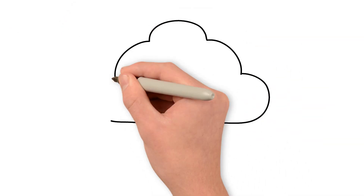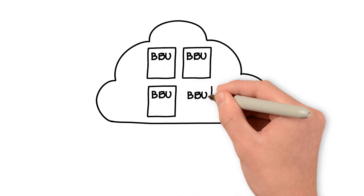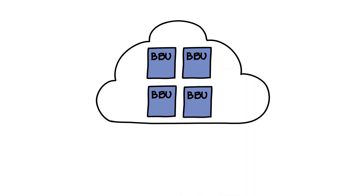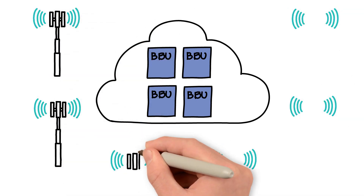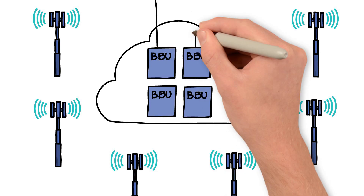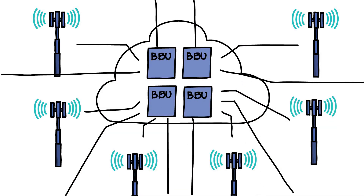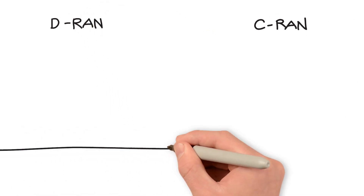A more advanced configuration connects the centralized BBUs together into a BBU pool. This pool can use the power of many BBUs to supply several base stations at the same time, creating a many-to-many relationship. It is in this form that networks can truly profit from all advantages provided by C-RAN. C-RAN has several big advantages over D-RAN.